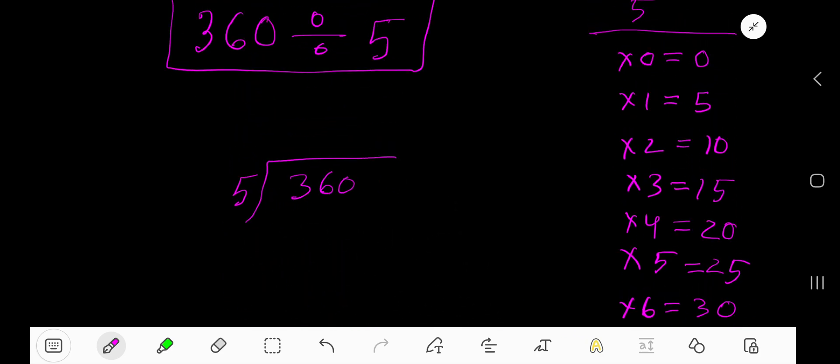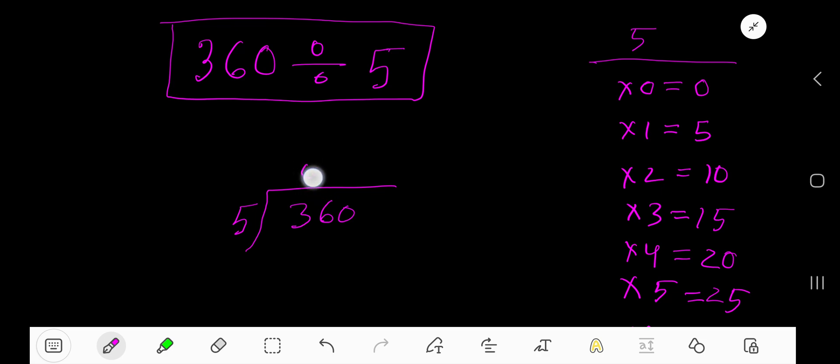Now, look, 5 goes into 3 how many times? 0 times as 3 is less than 5. So, 0 times 5, 0. If you subtract, you are getting 3.